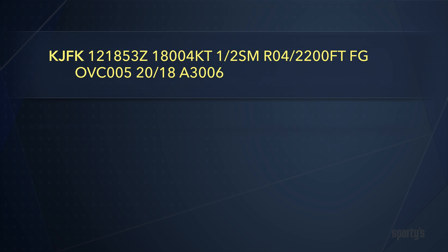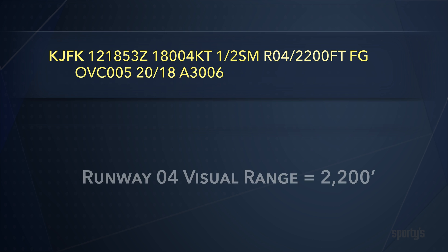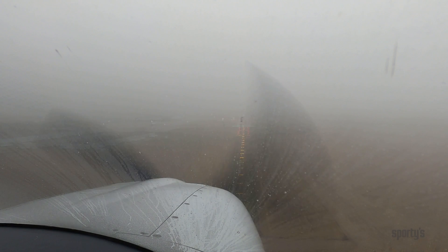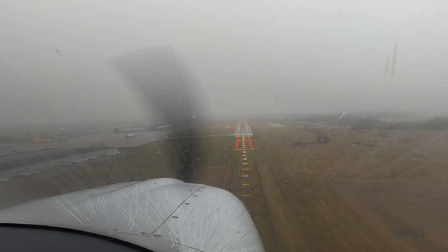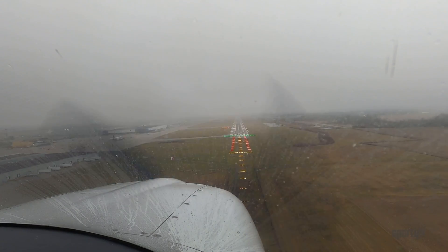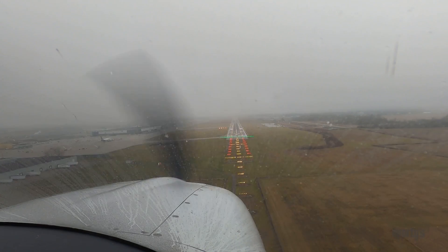There are a few more things you should know about METARs. Beyond statute mile visibilities, the visibility for a specific runway may be given as a runway visual range in feet. RVRs are measured by sensors located near the runway and are of interest to instrument operations.